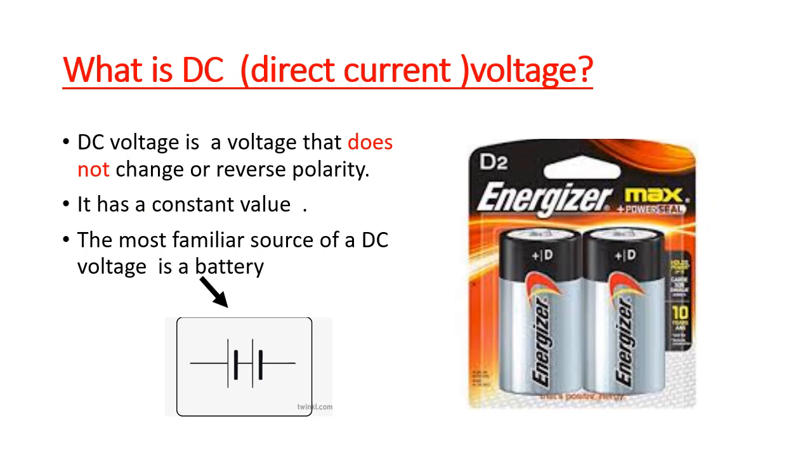DC voltage is a voltage that does not change or reverse polarity. In other words, it has a constant value. The most familiar source of a DC voltage is a battery, like in the figure shown. And this is the symbol of the battery.